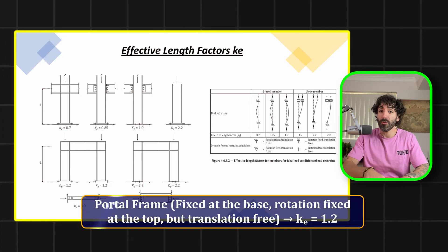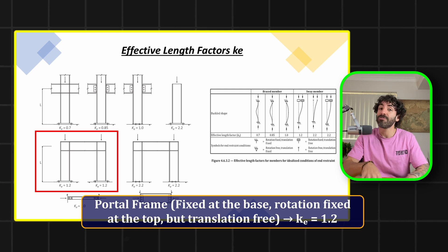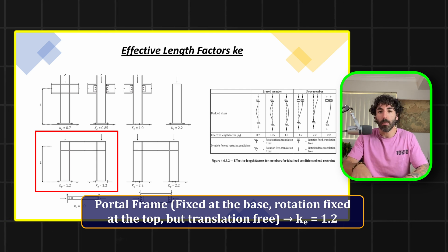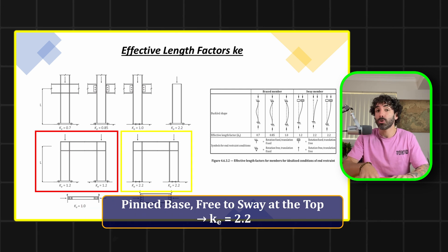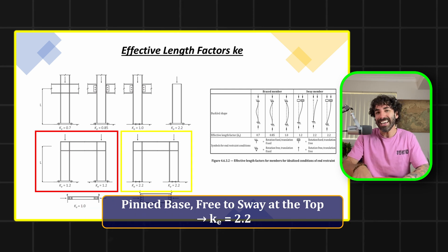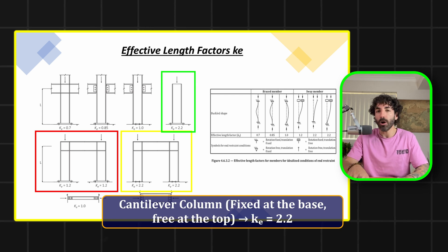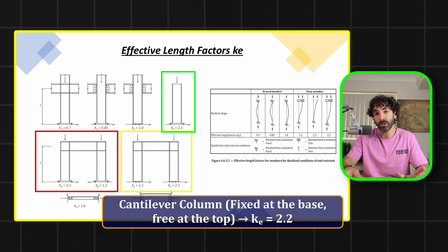For sway members, where the column is free to move laterally, the values are different. For example, a portal frame fixed at the base with rotation fixed but translation free at the top gives KE = 1.2. If it's pinned at the base and free to sway at the top, KE = 2.2. A cantilever column fixed at the base and free at the top also gives KE = 2.2.